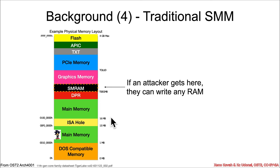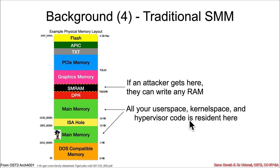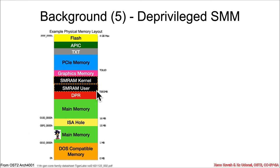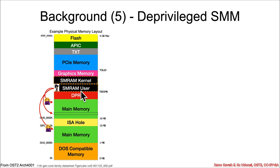If an attacker gets into SMM, they have unmitigated access to everywhere — user space, kernel space, and hypervisor code. If Dark Sonic broke into SMM, he can write all over memory and compromise your hypervisor. But if the vendor is using this new mechanism to deprivilege SMM, it essentially creates a user space-kernel space separation, like we normally have in operating systems. Now when Dark Sonic tries to write to memory, it is denied, and only a small area of memory is allowed for SMM to write to — effectively deprivileging it so it can no longer scribble over everything.